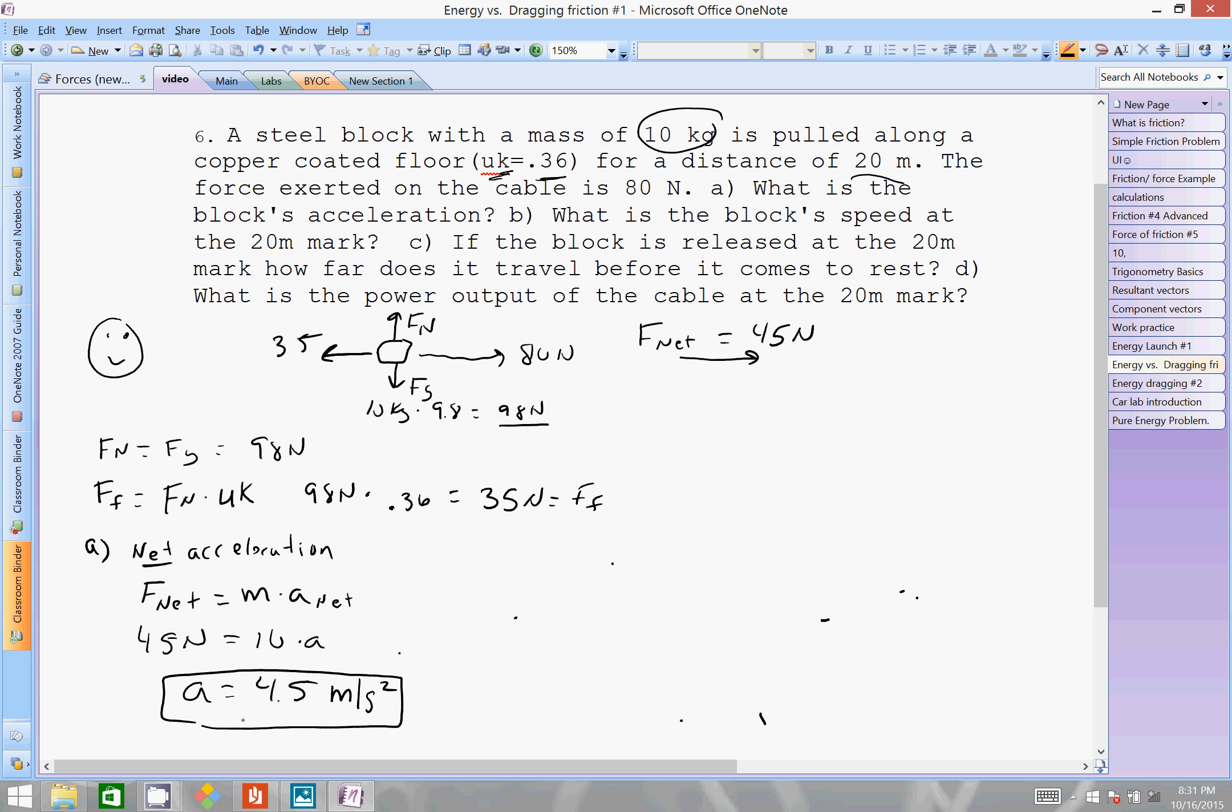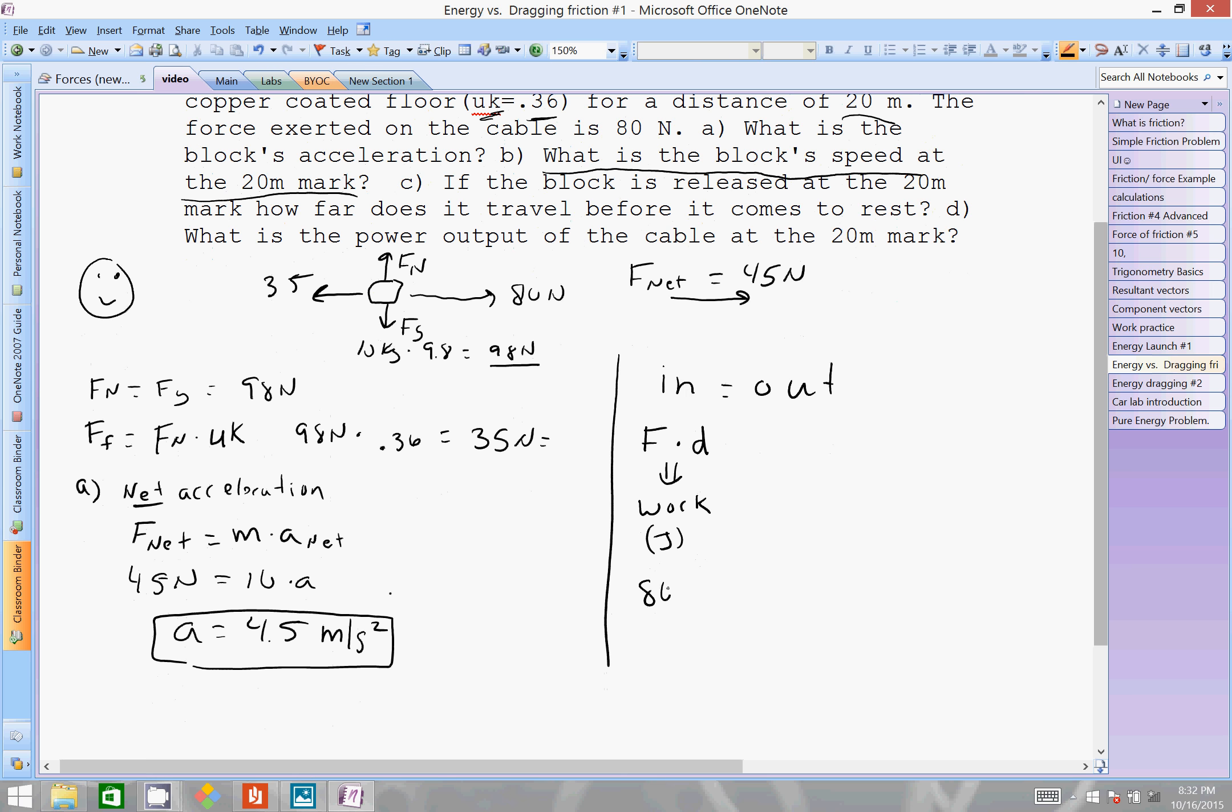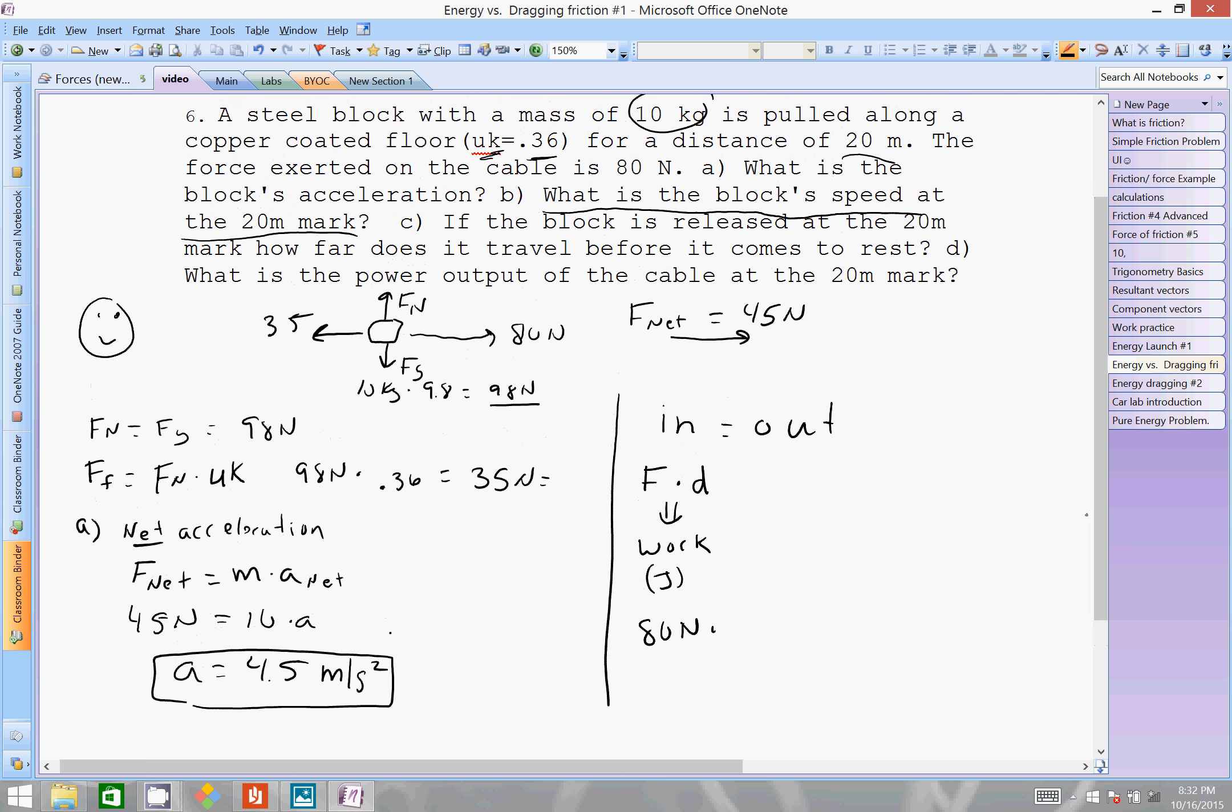Let's see. What is the block's speed at the 20 meter mark? So at this point, we could continue with some of our kinematic mathematics. But this video is more dealing with energy. So let's solve B here. Energy in equals energy out. And the energy in, before we have a sort of a force being applied on this object for a certain amount of distance. This is classic mathematics for work. Work is just a form of energy in joules.